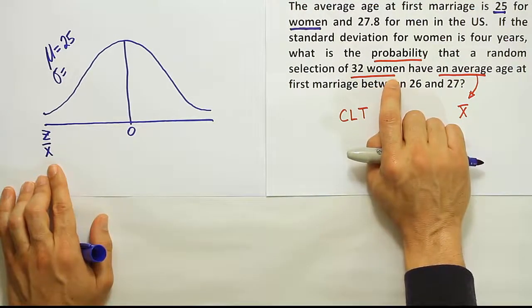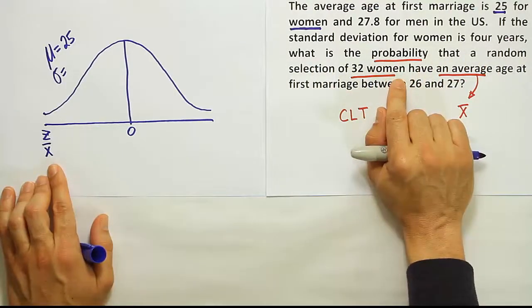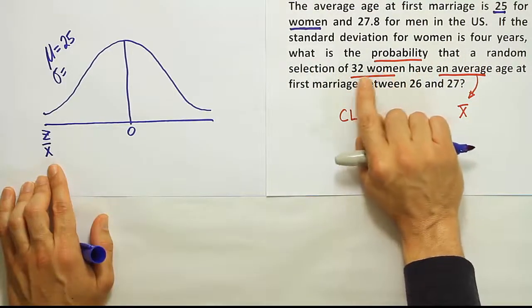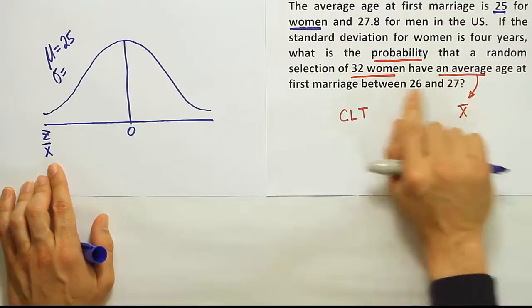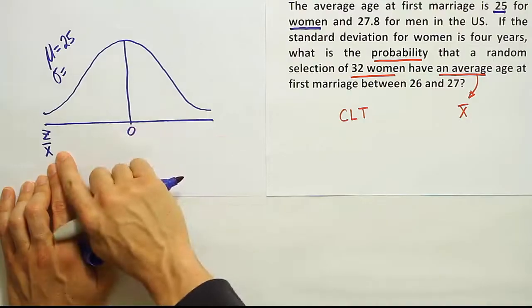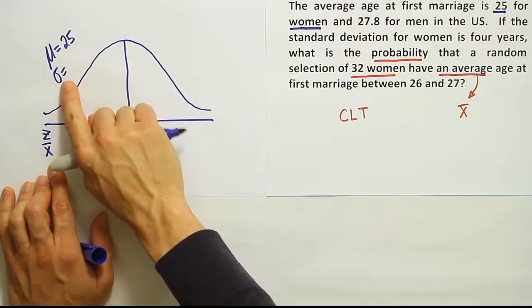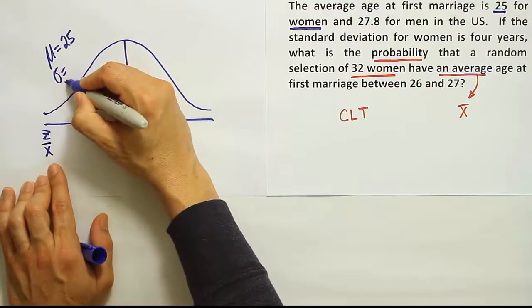And we see that because it doesn't say the probability that a randomly selected woman, it doesn't just say woman as in one woman. It says 32 women. So that's an important key phrase. You have to pay attention to that. You want to be watching to see if it's the probability that a single woman has an average age or whether it's more than one woman. If it's more than one woman, you know that this is x-bar.